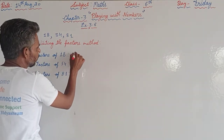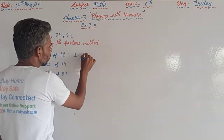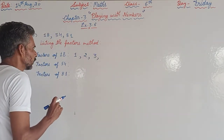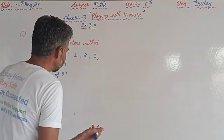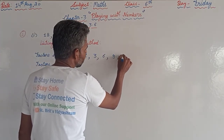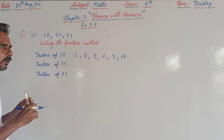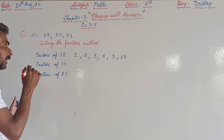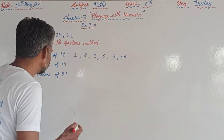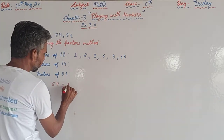For the factors of 18: 1 is a factor, 18 comes in the table of 2, and the table of 3. 18 does not come in the table of 4 or 5. 18 comes in the table of 6 and also in the table of 9, and then 18 itself. So we find which numbers 18 is divisible by.